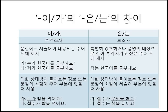주격조사 이가 is used when the subject of the sentence is the counterpart of the predicate part of the sentence. 누가 한국어를 공부해요? — Who studies Korean? 제가 한국어를 공부해요 — I study Korean. So 제, meaning 'I', is the counterpart of 공부해요. In this case, 제가 is used — 가 is attached.